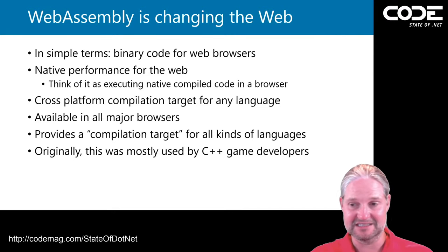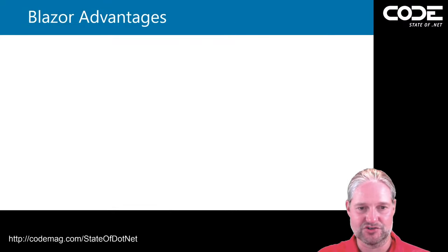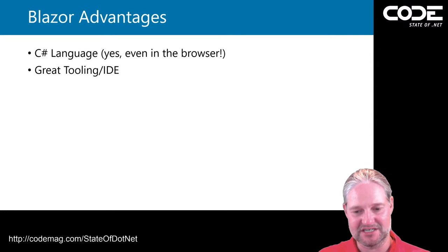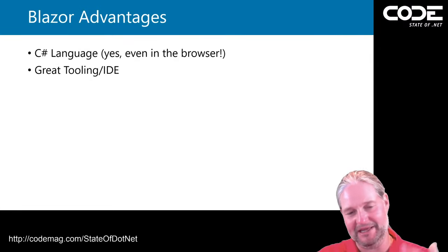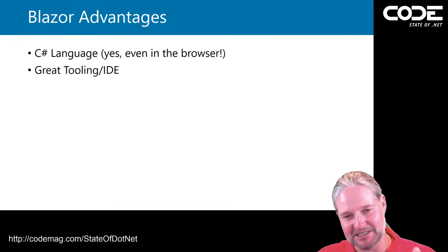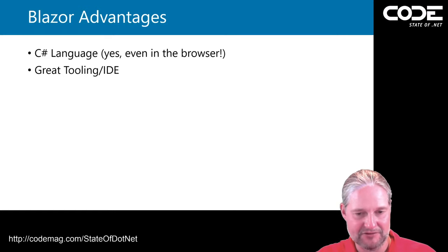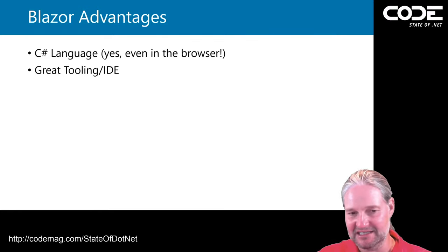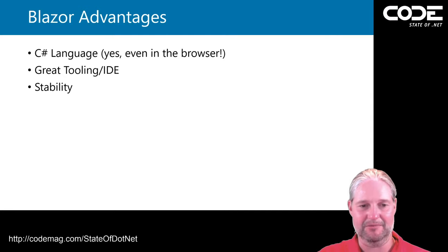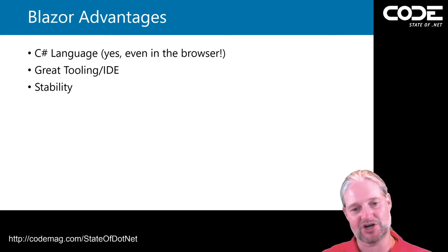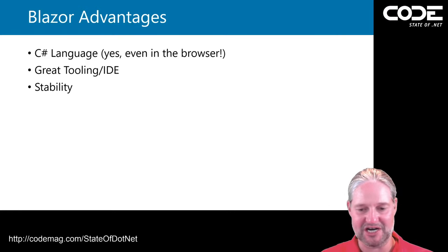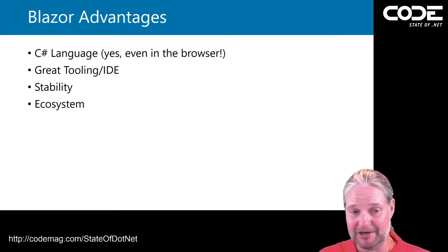The advantages I find most important: C# language — I can use it in the browser not just because I like the language and have the skill, but also because I can reuse code I already have, like existing business logic. The tooling and IDE are great — use Visual Studio or Visual Studio Code, very rich environment. Stability is huge to me: if you look at how stable C# has been over the years compared to what you go through with JavaScript frameworks, that's a big difference. It also has a huge ecosystem, and people are very excited about it with a big open source community.